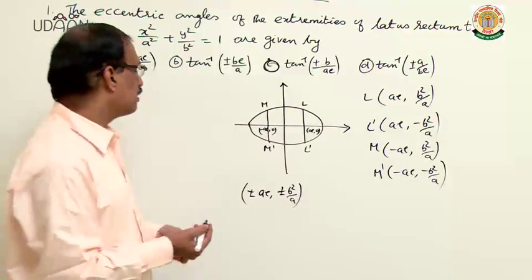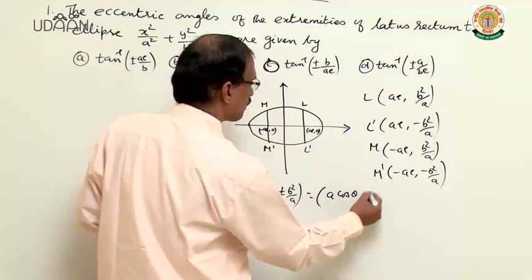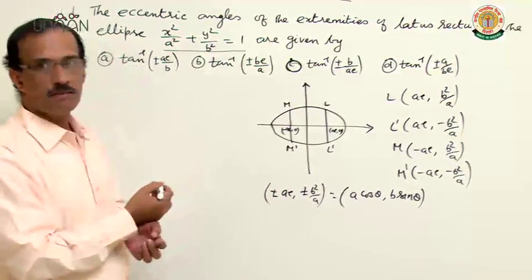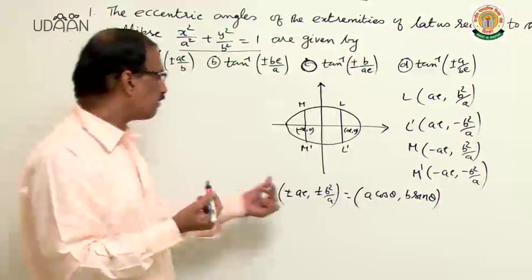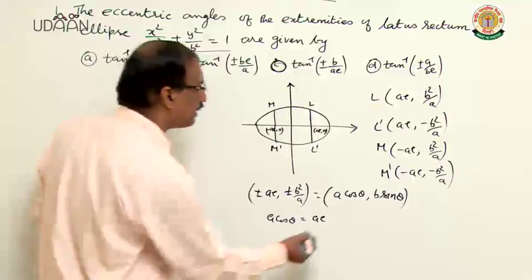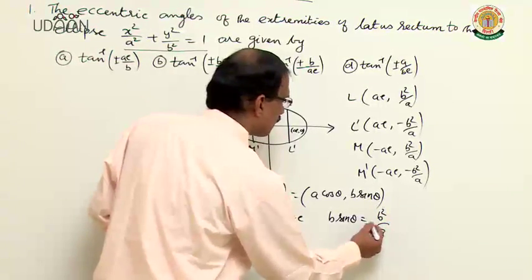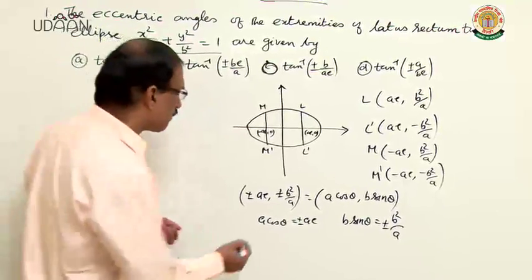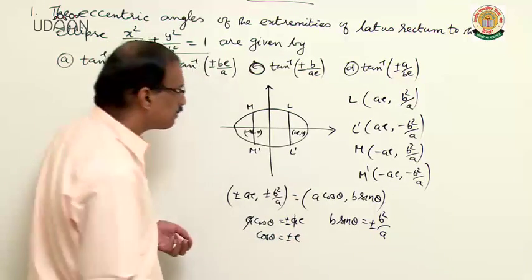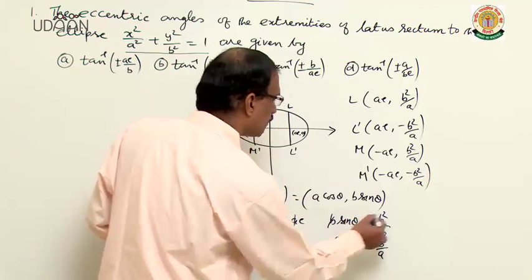This coordinate can be written in parametric form as (a cosθ, b sinθ) for the ellipse x²/a² + y²/b² = 1. Comparing: a cosθ = ±ae gives cosθ = ±e, and b sinθ = ±b²/a gives sinθ = ±b/a.